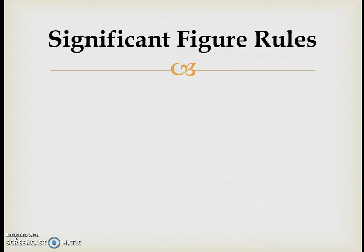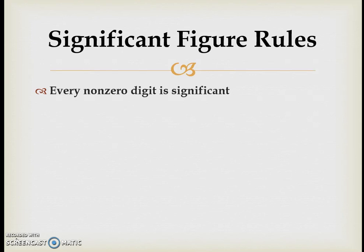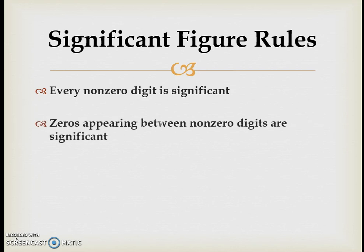So how do you know which digits are significant and which are just placeholders? The first rule is that every non-zero digit within a number is significant — any digit from one through nine is a significant digit. So in a measurement of 123 centimeters, all three figures are significant. The second rule involves zeros that appear between numbers; those zeros are actually measured zeros, so they are also significant digits.